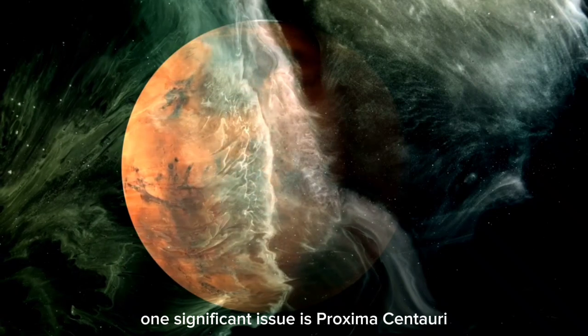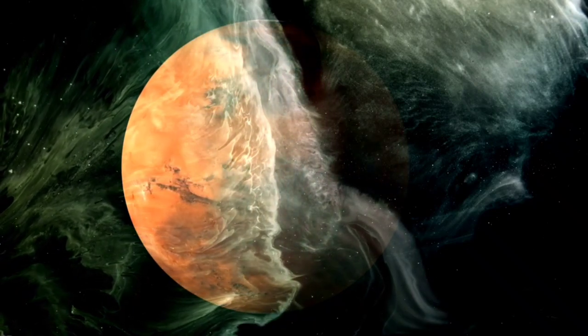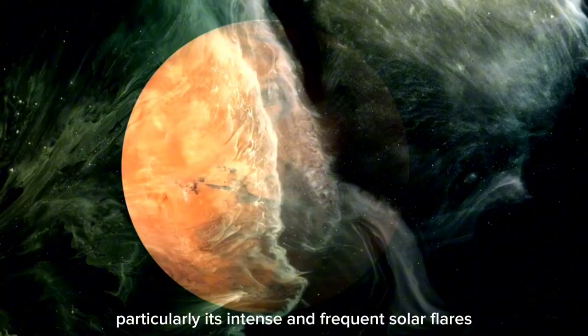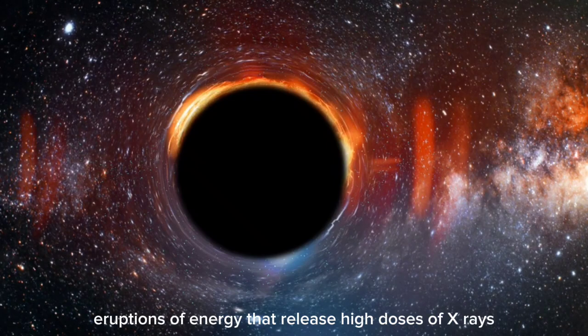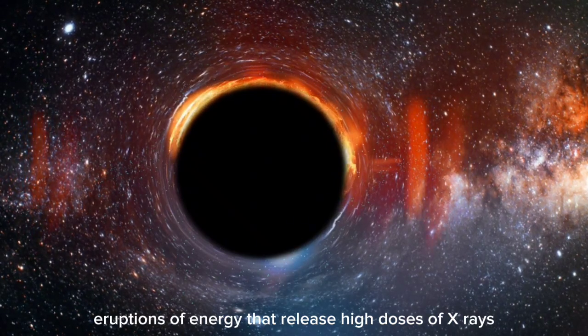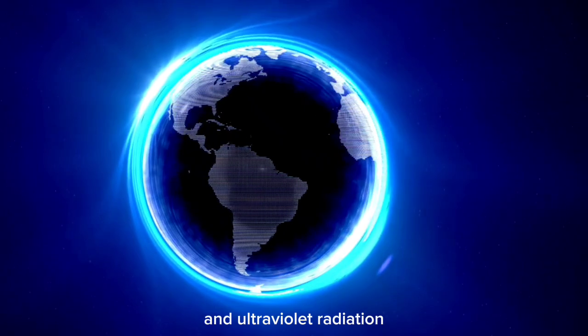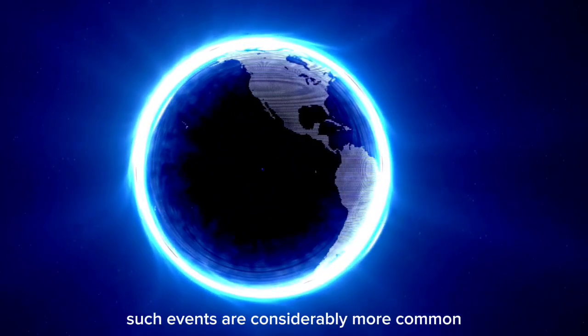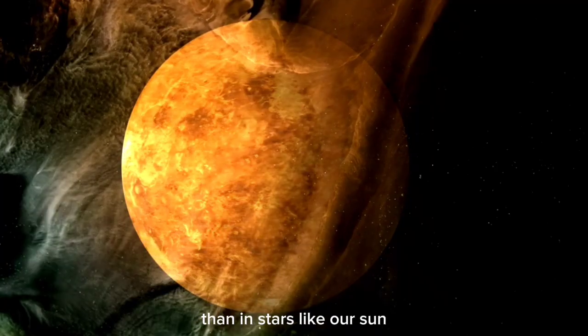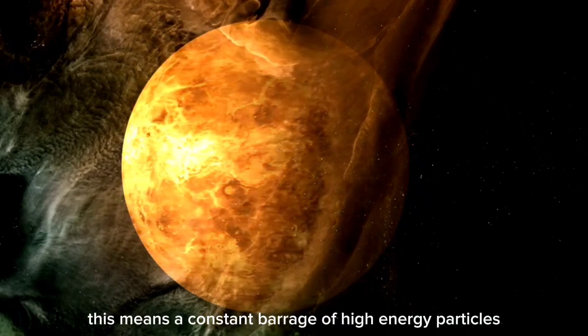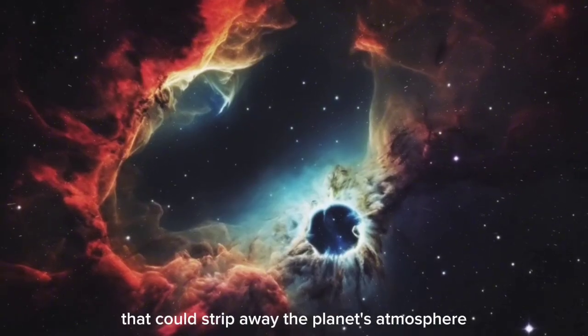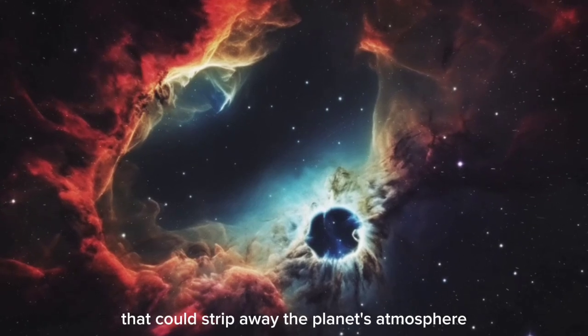One significant issue is Proxima Centauri's stellar activity, particularly its intense and frequent solar flares. These flares are sudden, powerful eruptions of energy that release high doses of X-rays and ultraviolet radiation. Such events are considerably more common and extreme in red dwarfs than in stars like our Sun. For Proxima b, this means a constant barrage of high-energy particles that could strip away the planet's atmosphere over time.